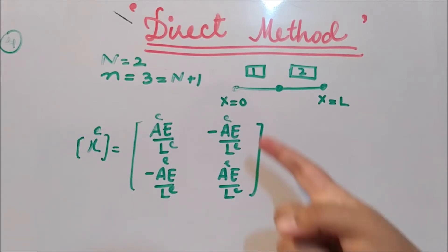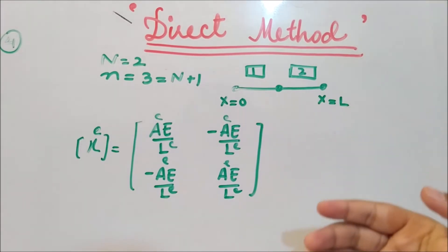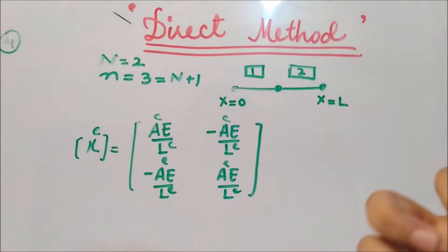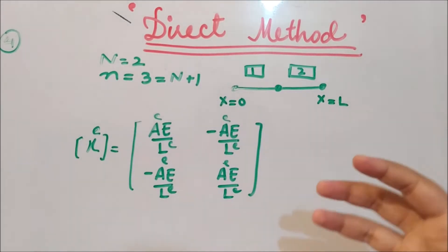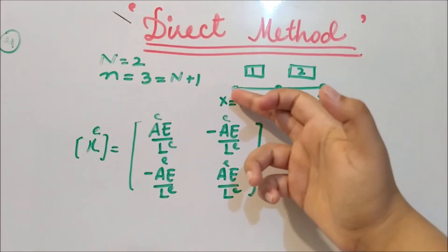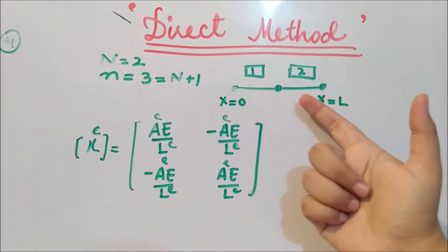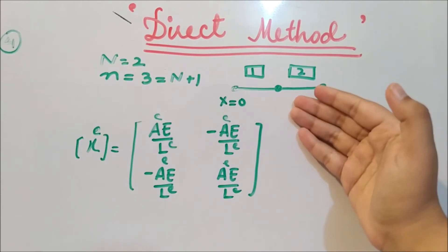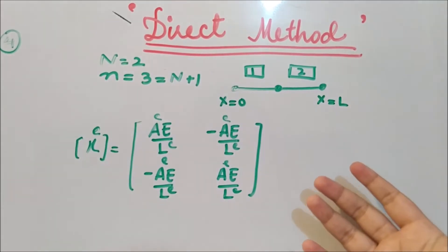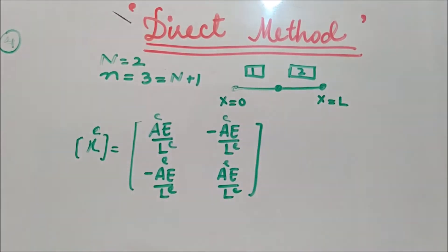We have two elements here. In the assembly step, we have to gather all of the information together to get the whole idea of the structure. We will write the stiffness matrix, the force or load vector, and the displacement vector for the whole structure.